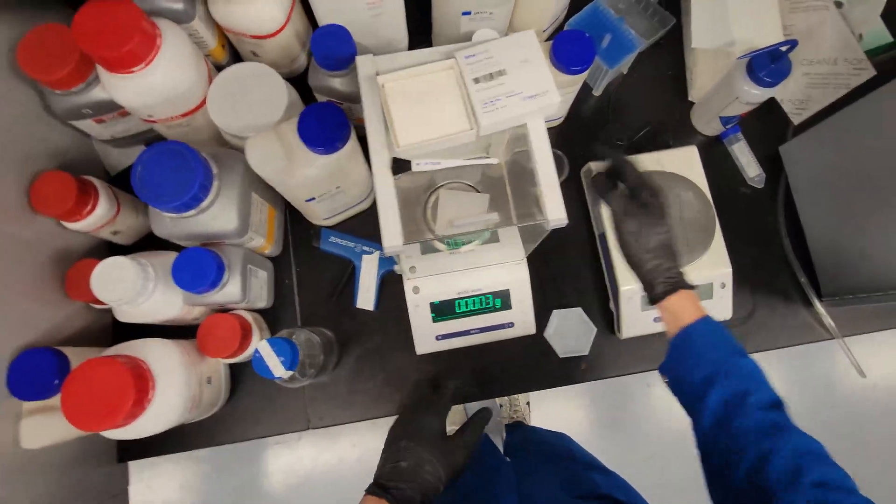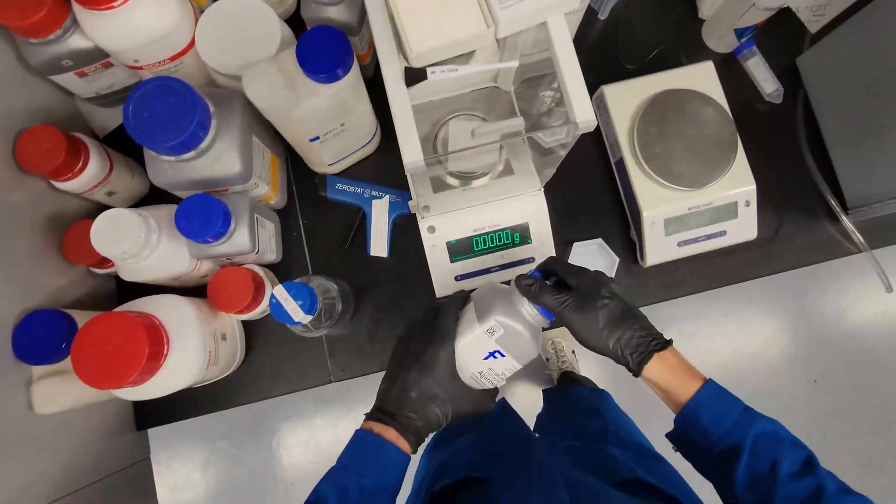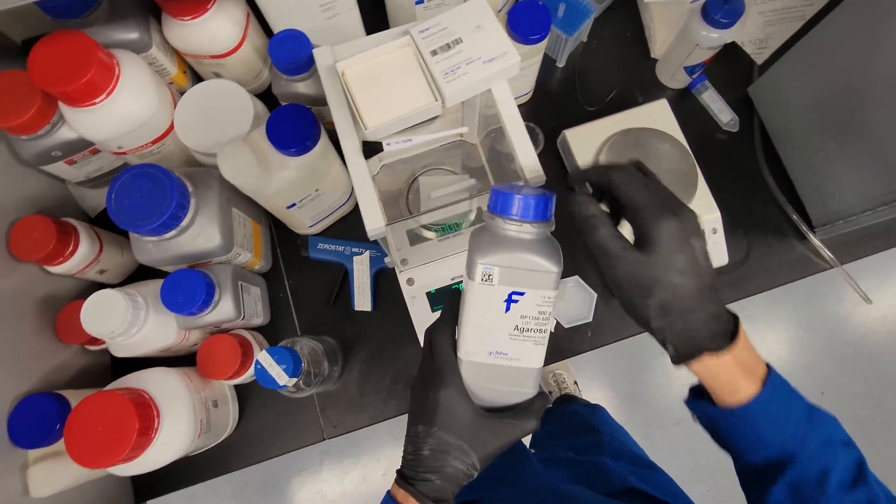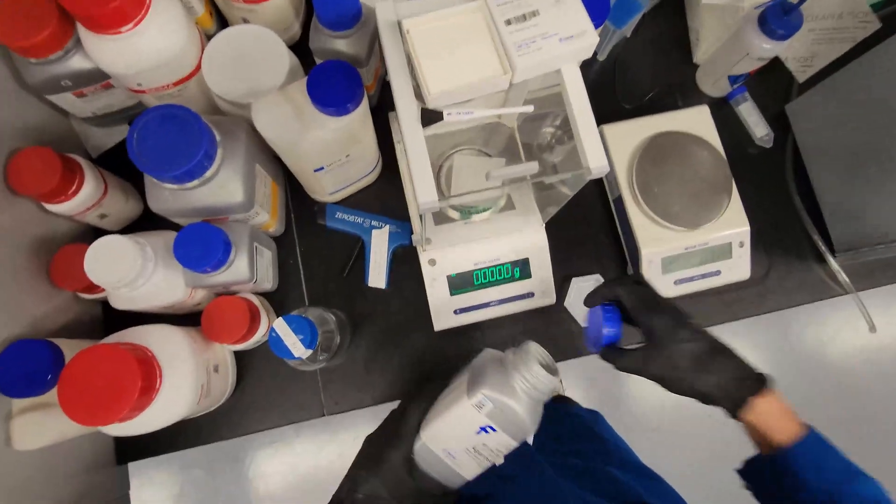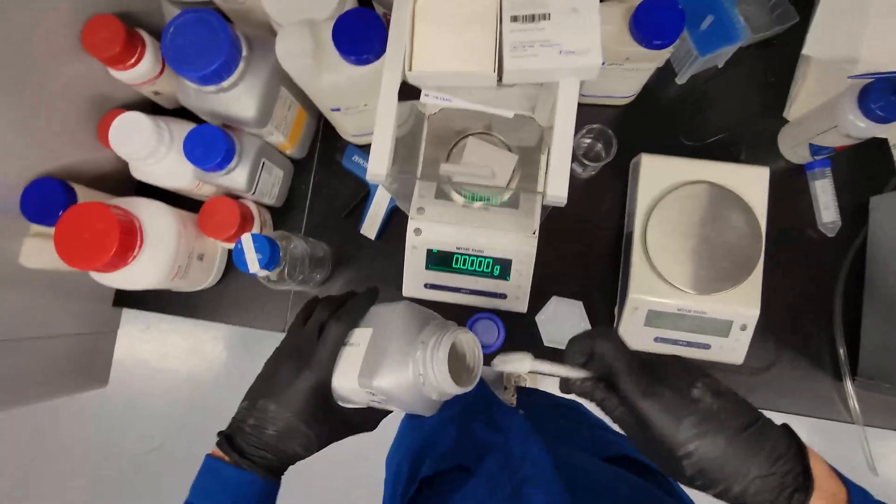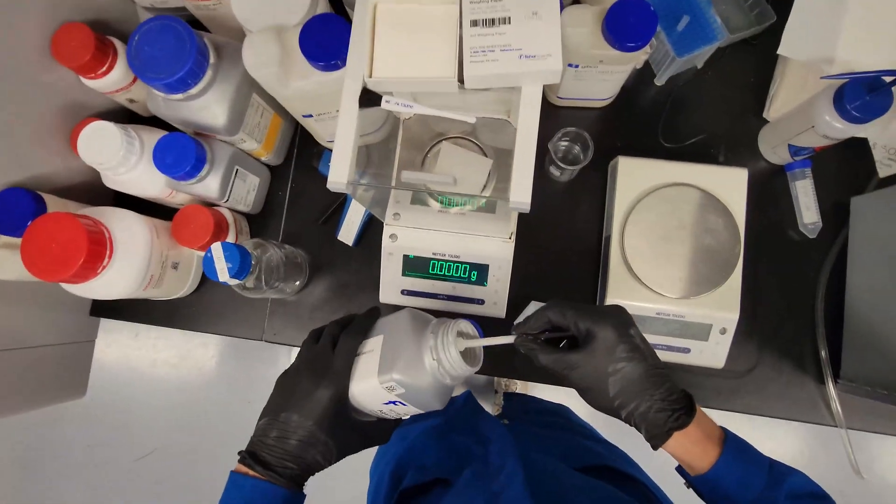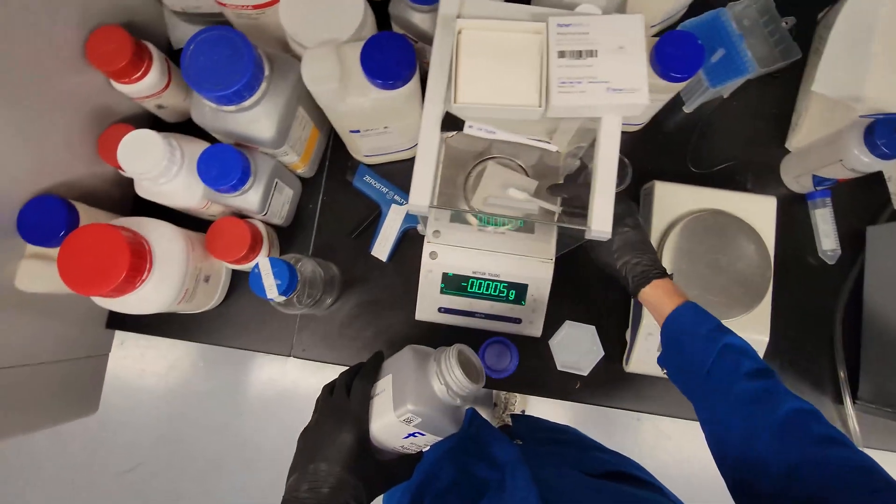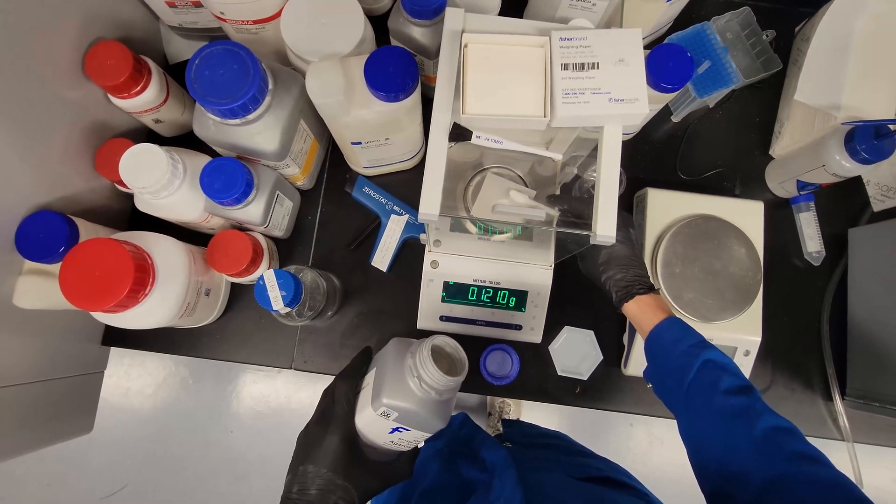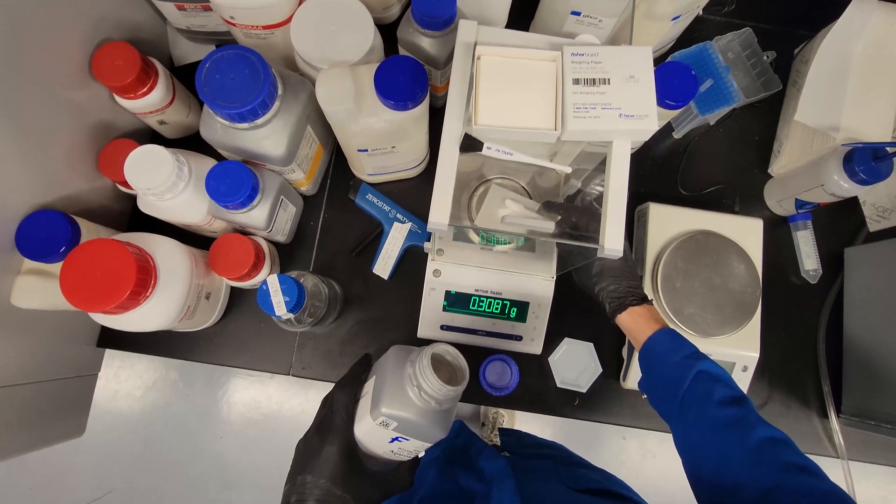Here's our weigh paper. We're going to zero tare our scale. This is agarose, not agar. It says genetic analysis grade. English is hard. We have this little scooper on the side, which makes it convenient. We're making a roughly 1% agarose gel. So if we have 35 milliliters or 35 grams of our TBE buffer, we need to add 350 milligrams of our agarose.